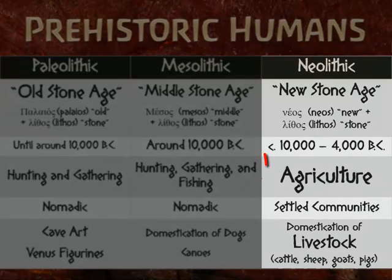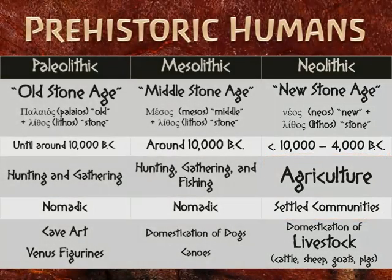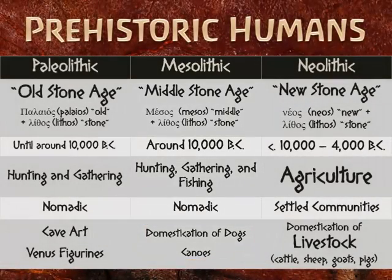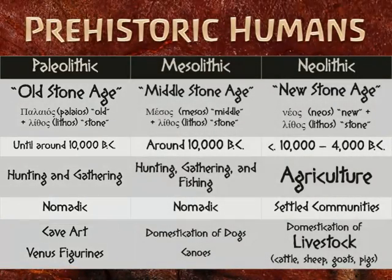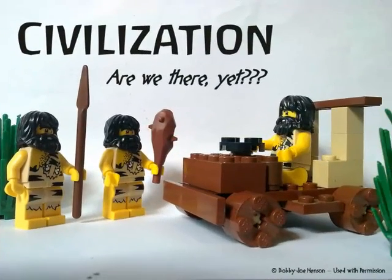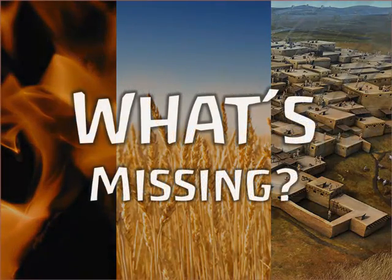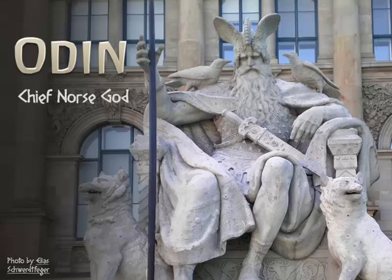To review: we have the Old, Middle, and New Stone Ages. The Neolithic period is distinguished by agriculture and settled communities. Throughout most of human existence, people were hunting and gathering. The Mesolithic brought domestication of dogs and more complex technologies. The Paleolithic gave us cave art and Venus figurines — the art of people doing little more than surviving. By the Neolithic we had fire, agriculture, and cities, but what was still missing? If you guessed writing, you are absolutely correct — and that's another story.